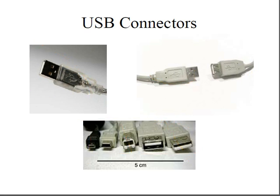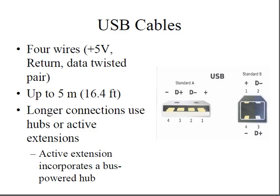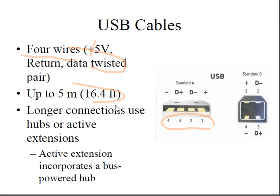USB cables have four wires: plus five volt, return, and a data twisted pair. The standard cable length is up to five meters, or 16.4 feet, though today you can have longer cables. Longer connections use hubs or active extensions to amplify the data, and an active extension incorporates a bus-powered hub.